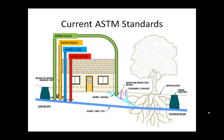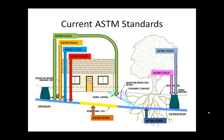Additional ASTM standards include F1743, standard practice for pulled-in-place cured-in-place thermosetting resin pipes; D2990, the method to measure tensile, compressive, and flexural properties of plastics; F2599 for sectional or point repair of a sewer using cured-in-place pipe; and F2454 for grouting of mainline joints and cracks. For manholes, F2551 covers cementitious manhole rehabilitation, F2414 covers grouting of manholes, and F2561 is a standard practice for rehabilitation of a sewer service lateral and its connection to the main using a one-piece main and lateral cured-in-place liner.